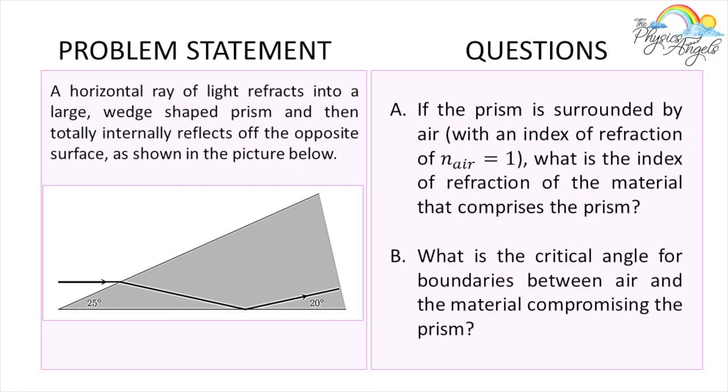So this is the problem we're going to be working on today. A horizontal ray of light refracts into a large wedge-shaped prism and then totally internally reflects off the opposite surface, as shown in the picture below. We are given the index of refraction of air, and basically we have to figure out what is the index of refraction of this wedge-shaped prism for part A at least. We'll get to part B in a second.